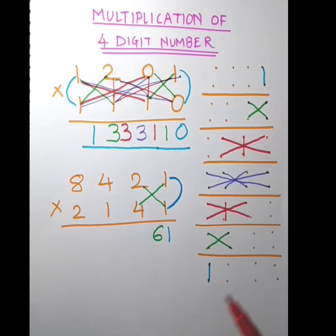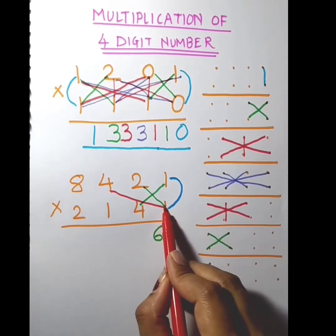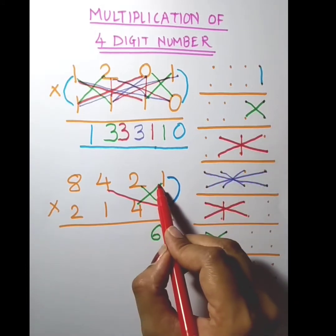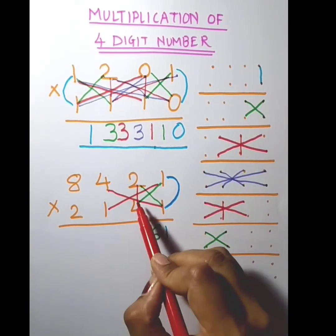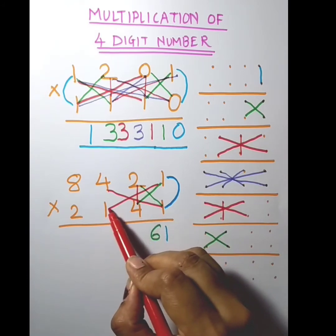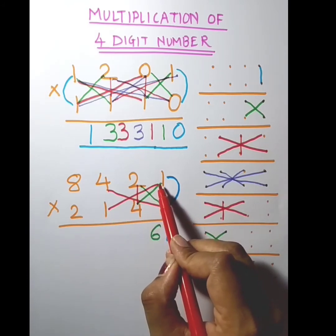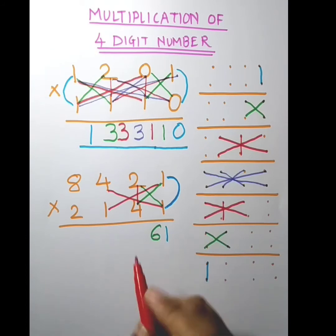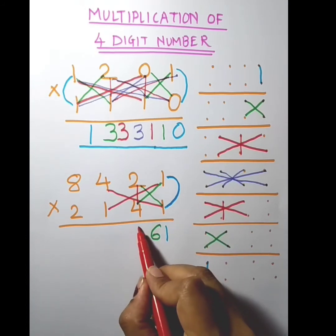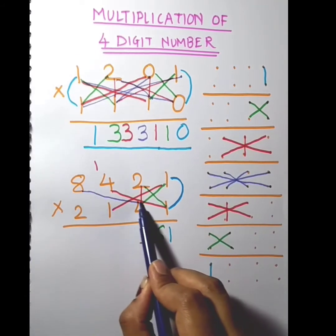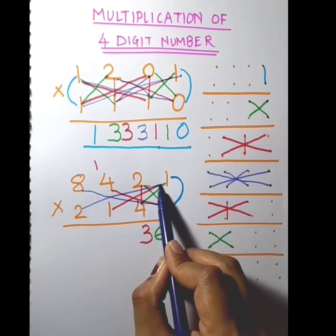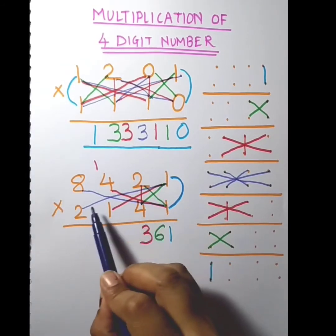Now multiply 4 into 1, then 1 into 1, then 1 into 1, and 2 into 4. So 2 into 4 is 8, 1 into 1 is 1 — so 8 plus 1 is 9, 9 plus 4 is 13. Write 3 and carry 1. Now we will multiply the corners: 8 into 1 and 2 into 1. 8 into 1 is 8, 2 into 1 is 2.